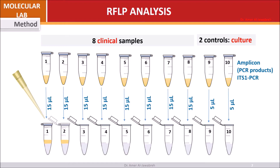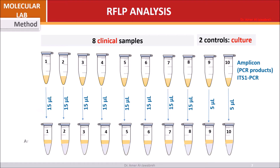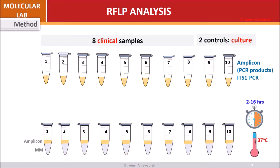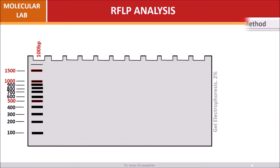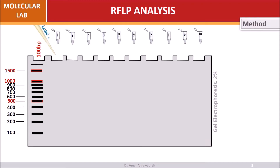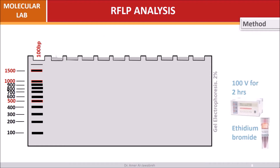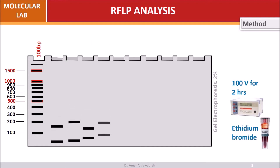Load tubes, mix well, and incubate at 37 degrees Celsius for 2 to 16 hours. Then load 20 microliters of restriction mix into gel slots. Perform gel electrophoresis on a 2% gel at 100 volts for 2 hours, then stain with ethidium bromide.